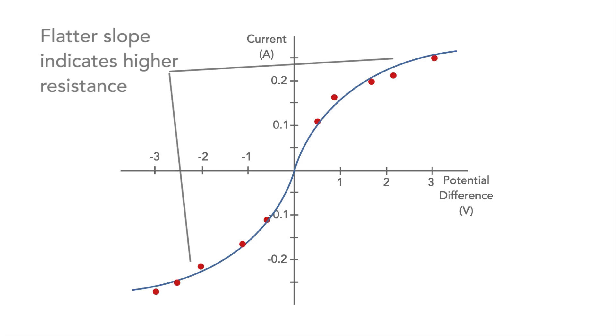At higher levels of potential, the current doesn't increase as much for the same increase in potential. In other words, the resistance is higher.